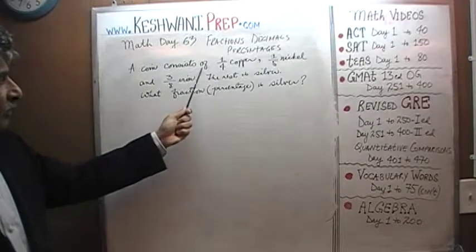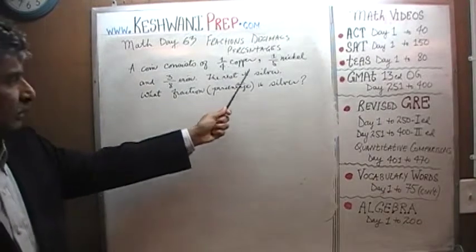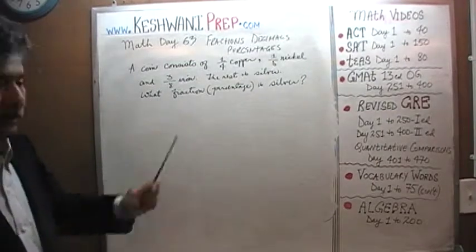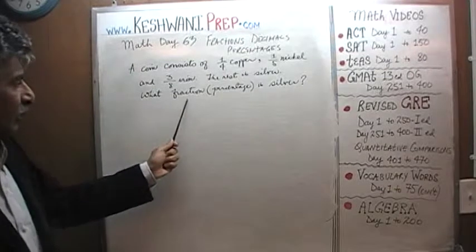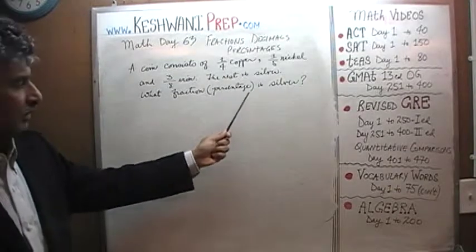A coin consists of one quarter copper, one fifth nickel, and three eighths iron. We are told that the rest is silver. The question is: what fraction or percentage is the silver?